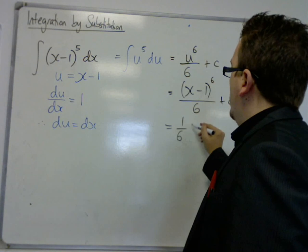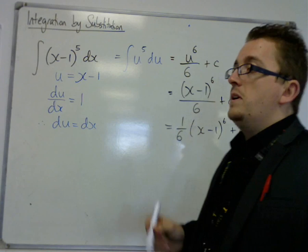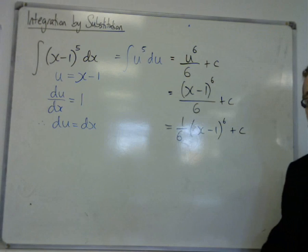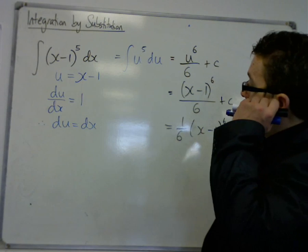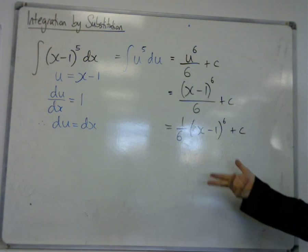So this is (x-1)^6/6 + c, or you could write it as 1/6(x-1)^6 + c. And this may well have been one that, if you're very good at reversing the chain rule, you might have been able to spot that immediately.